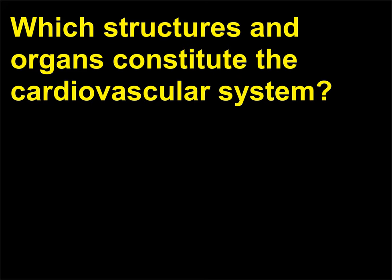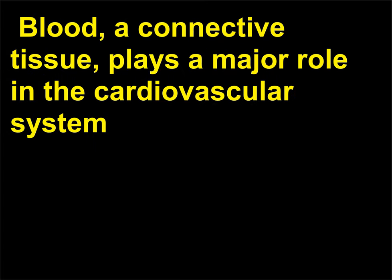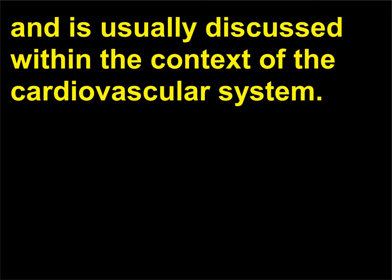Which structures and organs constitute the cardiovascular system? Technically speaking, the structures of the cardiovascular system are the heart and blood vessels. Blood, a connective tissue, plays a major role in the cardiovascular system and is usually discussed within the context of the cardiovascular system.